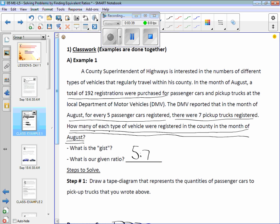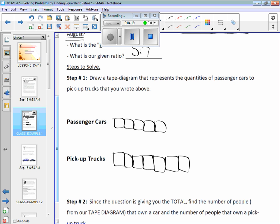If you look back at the problem, normally all of our word problems up to this point would tell you how many passenger cars there were, or how many pickup trucks there were, but they don't. What are they telling you? The total amount, which is 192. So it's not 192 of just passenger cars and it's not 192 of pickup trucks. They're telling you that everything added together is 192.